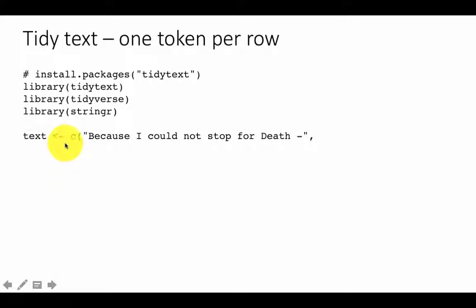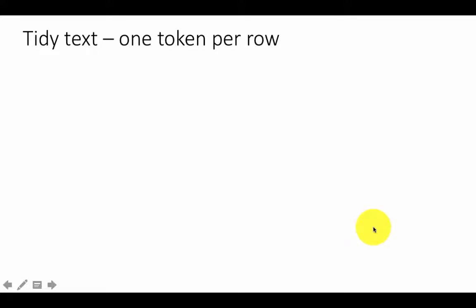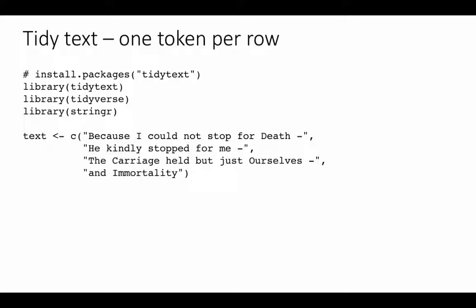Let's take a look at some text. We're creating a vector with c(), and the first element is 'Because I could not stop for Death'. The second element is 'He kindly stopped for me', and then 'The carriage held but just ourselves and Immortality'. This is just four lines from a particular poem. That's the text we are trying to deal with. Our unit of analysis is going to be the word, so this text is not yet in tidy form — first, it's not in a table or data frame.